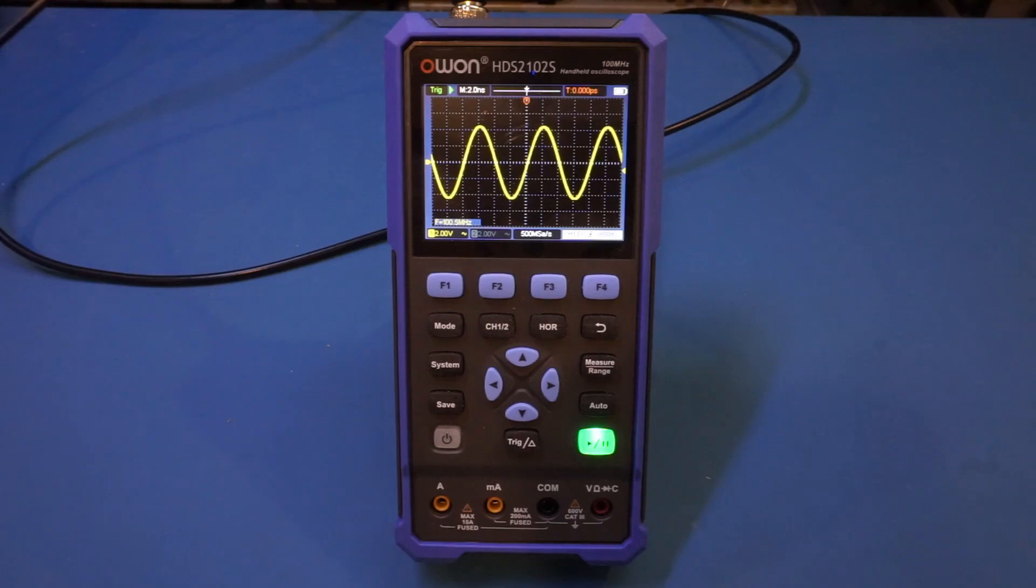As you can see, currently we are at 2 ns per division, so that means the cycle is 8 ns, which translates into 125 MHz. Obviously, that is not correct.